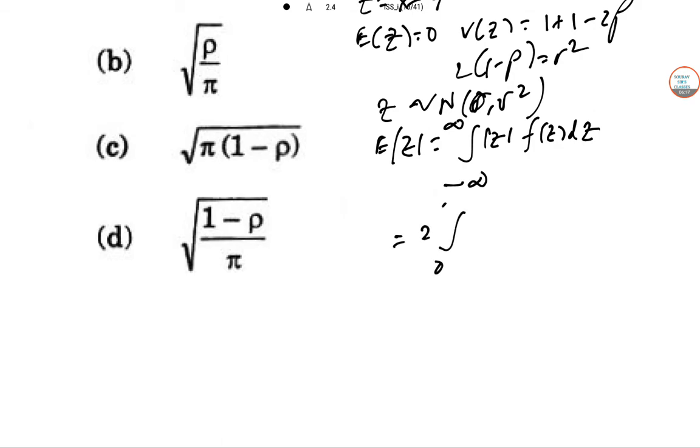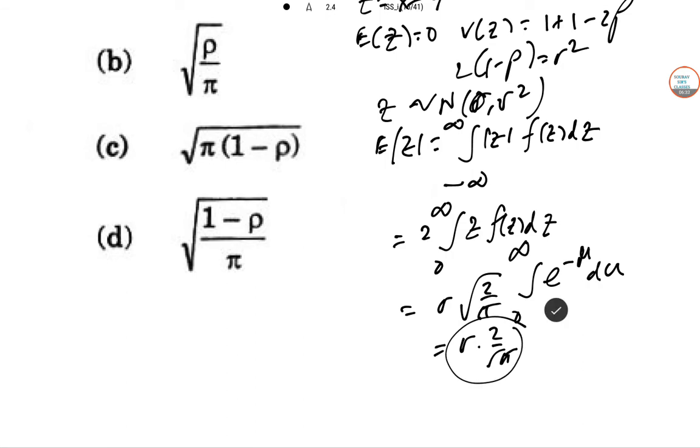This is 2, 0 to infinity, double we are taking, F of Z and DZ. So sigma 2 by root over 2 by pi, 0 to infinity, e to the power minus U, DU. So this is sigma root over 2 pi, where Z value is 1.